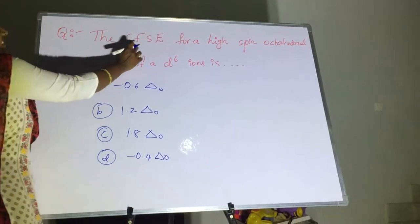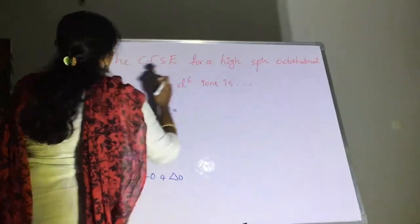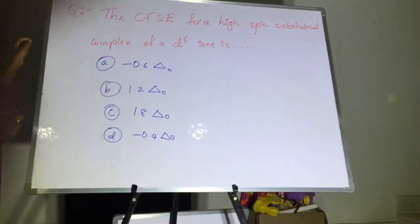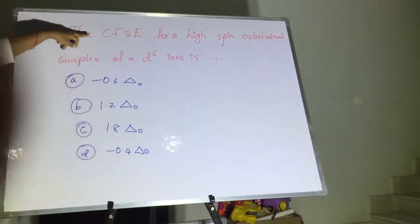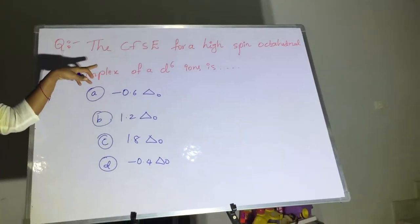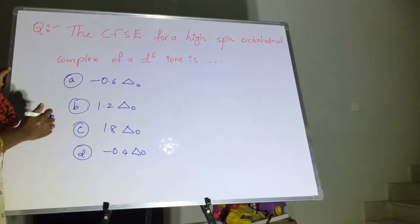Our next question is, the CFSE for high spin octahedral complex of d6 ion is. So when we are taking crystal field splitting energy, this crystal field splitting energy for different complexes we can calculate.